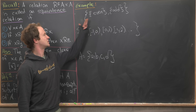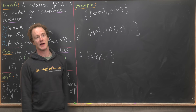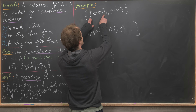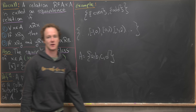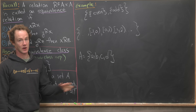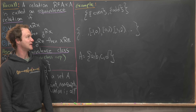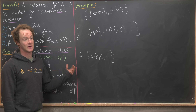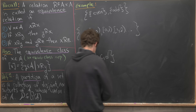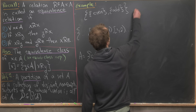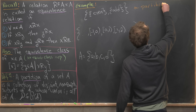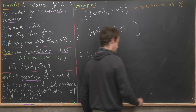The first example is even integers and odd integers. We have a set containing the set of all even integers and the set of all odd integers. Taking the union of even and odd numbers gives all integers, and a number is either even or odd — it can't be both — so there's no overlap. What we have here is a partition of the integers Z.